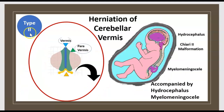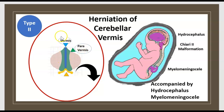Type 2 is a herniation of the cerebellar vermis. The vermis and paravermis areas are involved. In type 2, herniation of the vermis is accompanied by hydrocephalus and myelomeningocele.